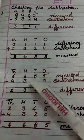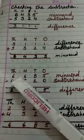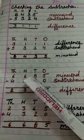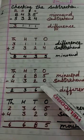Let us understand it with another example. The problem is 6,685 minus 4,320.